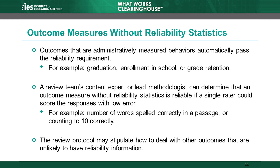A reliability statistic is sometimes not available for an outcome measure. In some cases, even though the study doesn't present a reliability statistic, the measure can meet the reliability requirement. The WWC automatically considers behavior outcomes measured using administrative data reliable because these outcomes are straightforward to measure. Examples include graduation from high school, school enrollment, and grade retention. Other outcomes are so straightforward to measure that a content expert or lead methodologist can determine that a single rater could score them with low error. For example, coders can very accurately score measures of how many words a child spelled correctly in a passage, or whether or not a child counted to 10 correctly. Some review protocols may also describe how to assess other outcome measures that are unlikely to have reliability information.